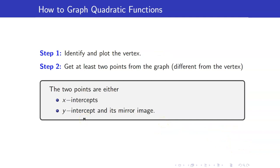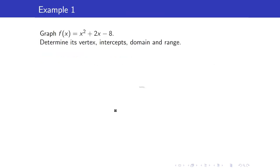To graph quadratic functions: first, identify and plot the vertex. Then get at least two points from the graph, making sure they are different from the vertex. These two points can be your x-intercepts, your y-intercept and its mirror image. For example, we want to graph f(x) equals x squared plus 2x minus 8.